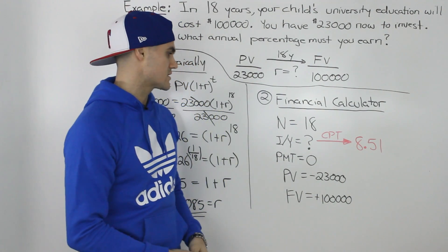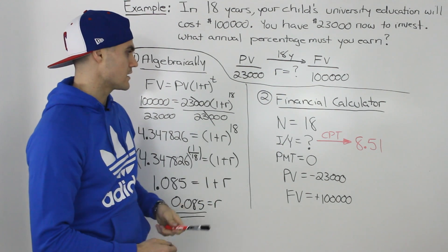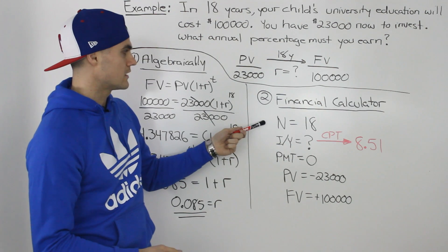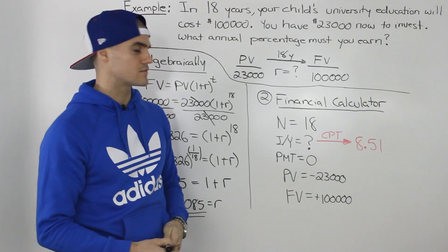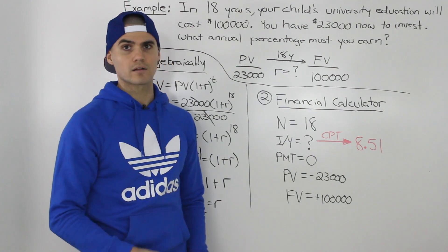So in conclusion, two different ways to calculate the interest rate. The algebraic way is a bit of a headache. It's still good to know, but what's mostly crucial is knowing how to use the financial calculator and making sure that you get those positives and negatives correctly, and you should be able to get the interest rate correctly as well.